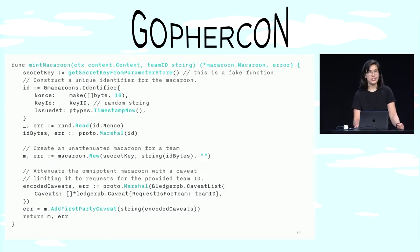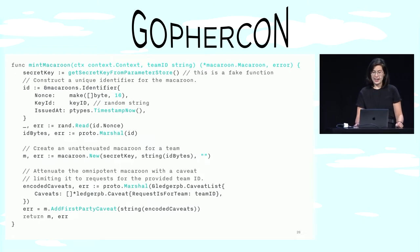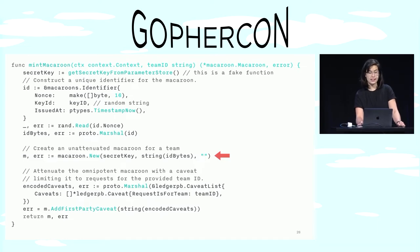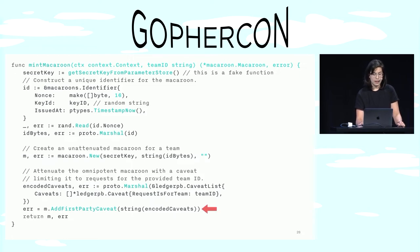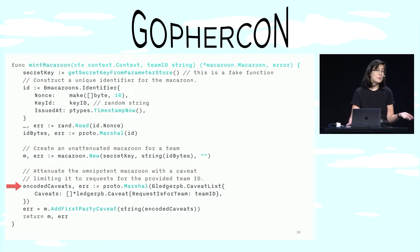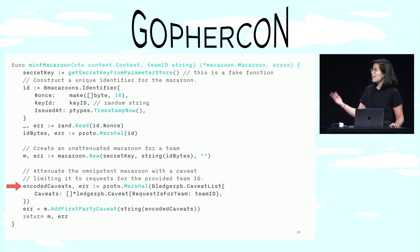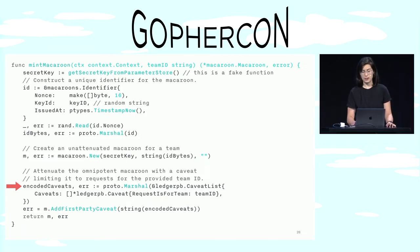In this example, each team gets its own macaroon. The important things to notice are that we first create an unattenuated macaroon — that is, a macaroon with no caveats — and then we add a caveat that limits this macaroon's power to a specific team. You might also notice that we encode the caveat as a protocol buffer, and that's because there's no standard format for them. This is all code from the Chain codebase, and we used the go-macaroons package, which makes it all possible.